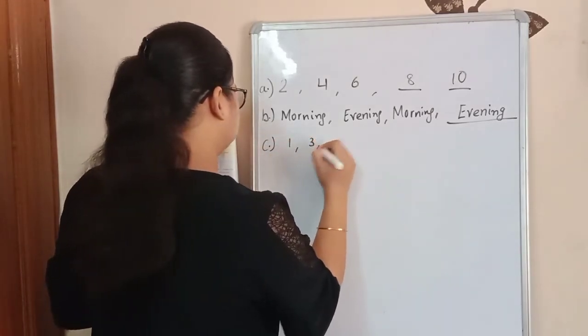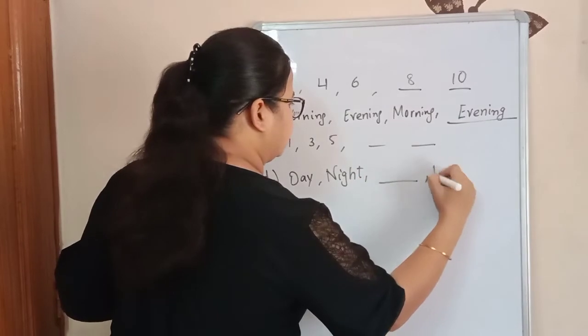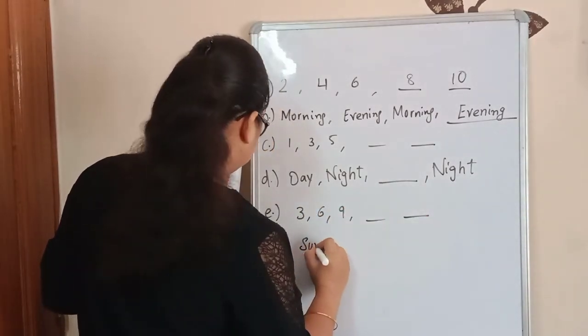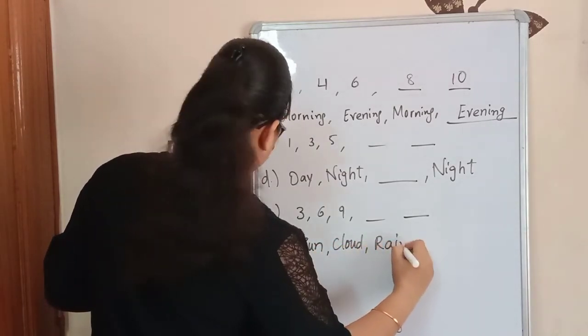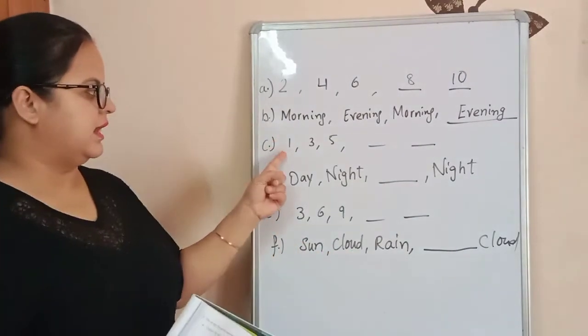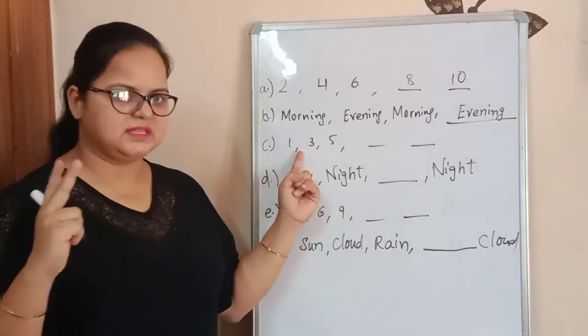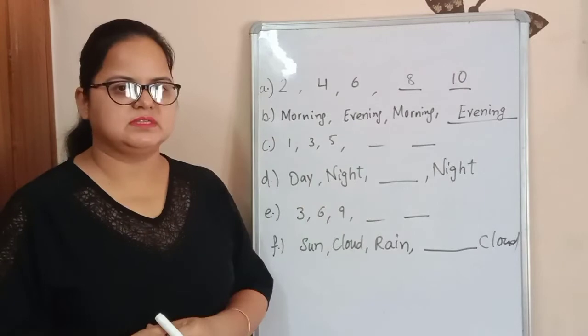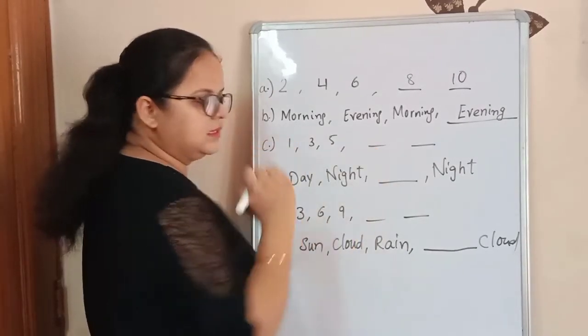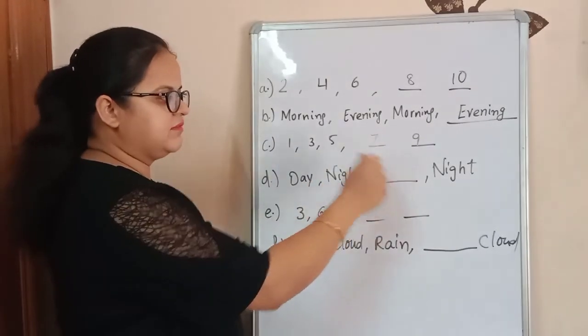The next one is one, three, five, and two blanks. One, three, five. Again you can see one, two is missing, the next number is three. Again four is missed and five is written here. So we have to skip only one digit and write the next. Here is five, then the next number is six. We will skip six and write seven here, skip eight and write nine here. One, three, five, seven, and nine.